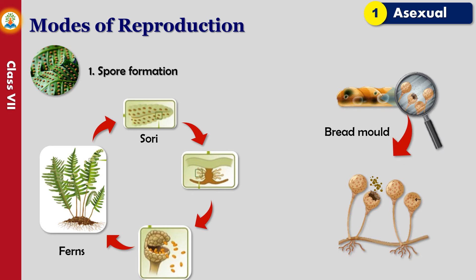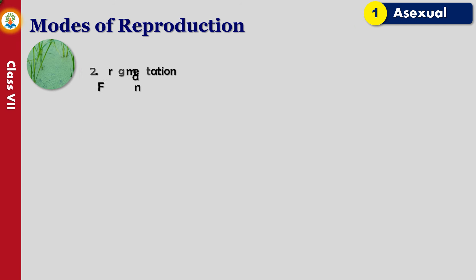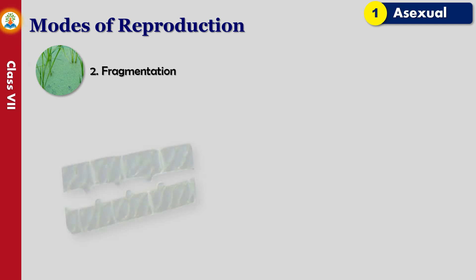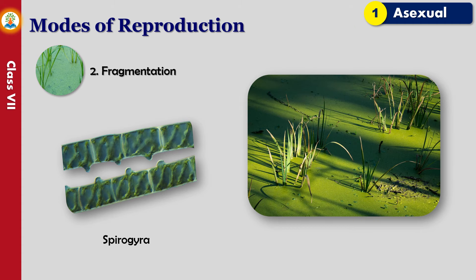Fungi such as rhizopus, or bread mold, also reproduce by forming spores.